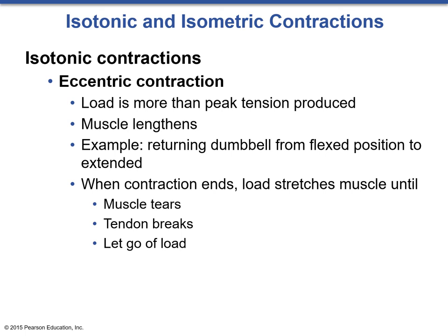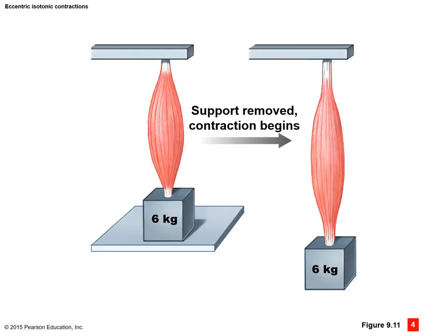In an eccentric contraction, the contraction ends when the load stretches the muscle until the muscle tears, the tendon breaks, or it lets go of the load. For example, with a six-kilogram weight the muscle is contracting and trying to hold on, but since it can only hold two kilos in the previous concentric example, the muscle is contracting while lengthening—it's too much load.